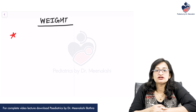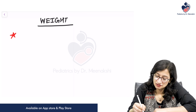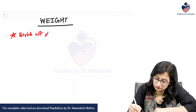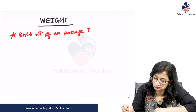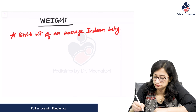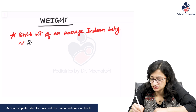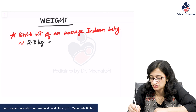Starting with the important anthropometric parameters one by one, beginning with the weight of the child. The birth weight of an average Indian baby is around 2.8 to 2.9 kgs. Any of these which is there in your options you can mark as the correct answer — 2.8 or 2.9 kgs.